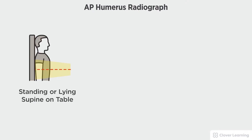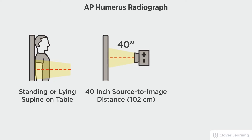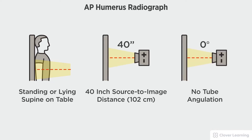In this view we will be demonstrating the AP Humerus. The AP Humerus should be performed with the patient standing at the upright bucky or lying on the radiographic table with a 40 inch source to image distance and no tube angulation.